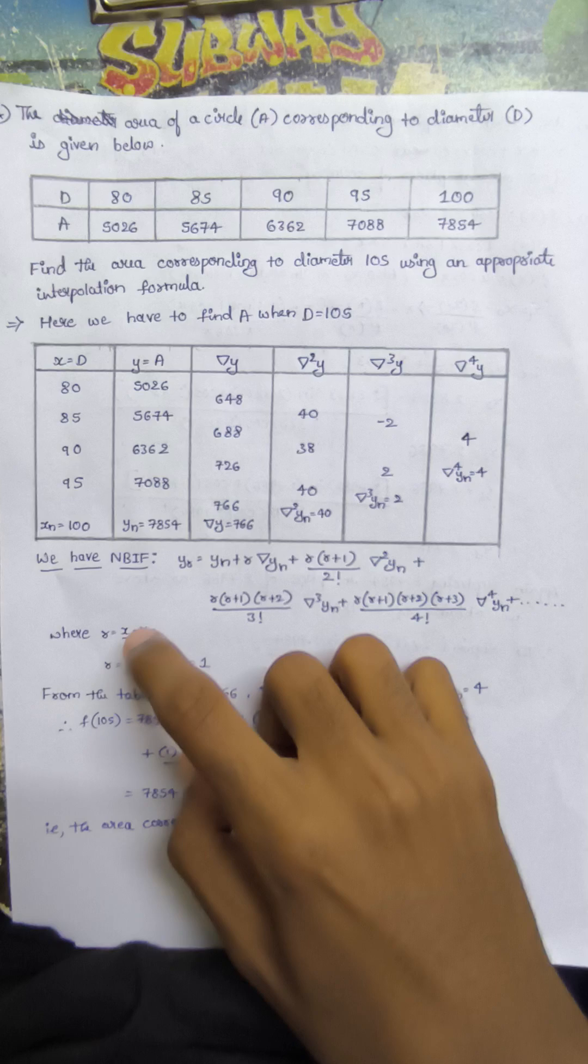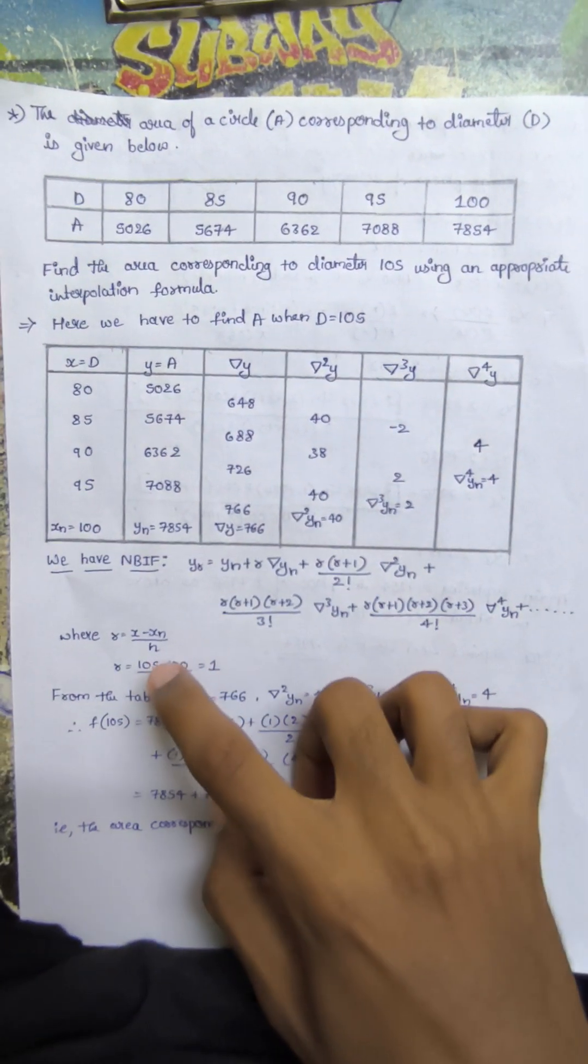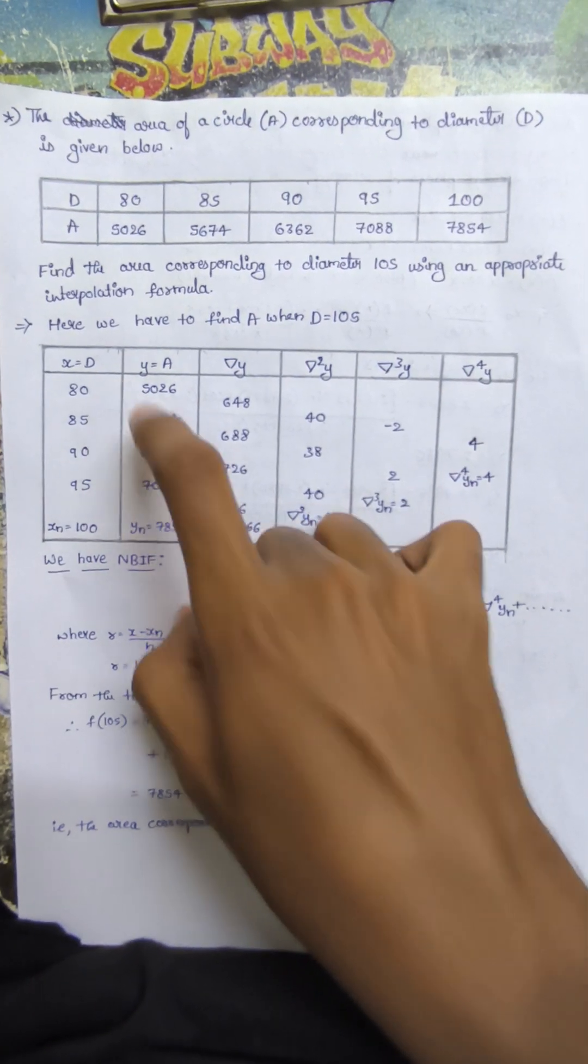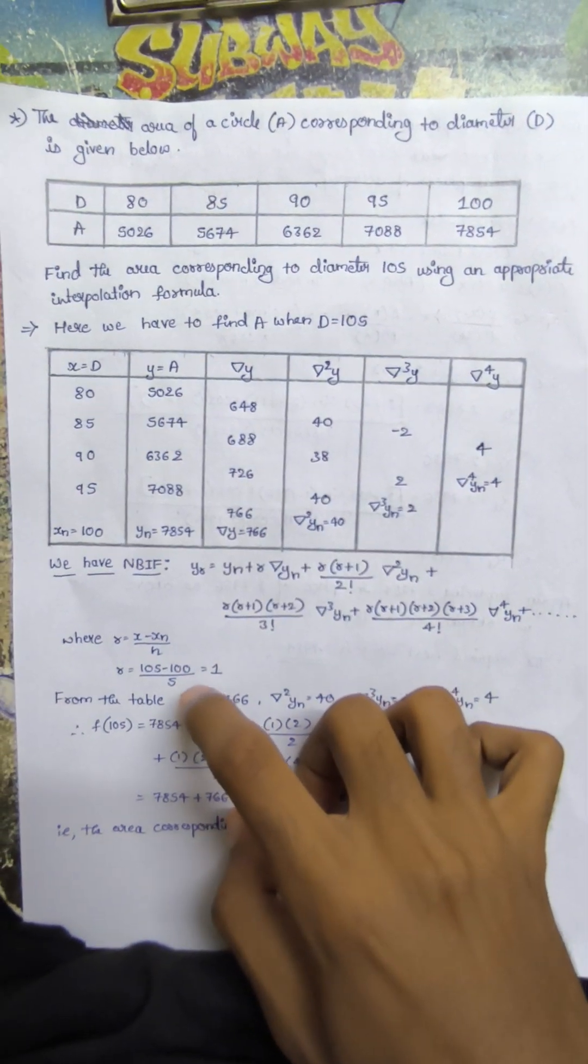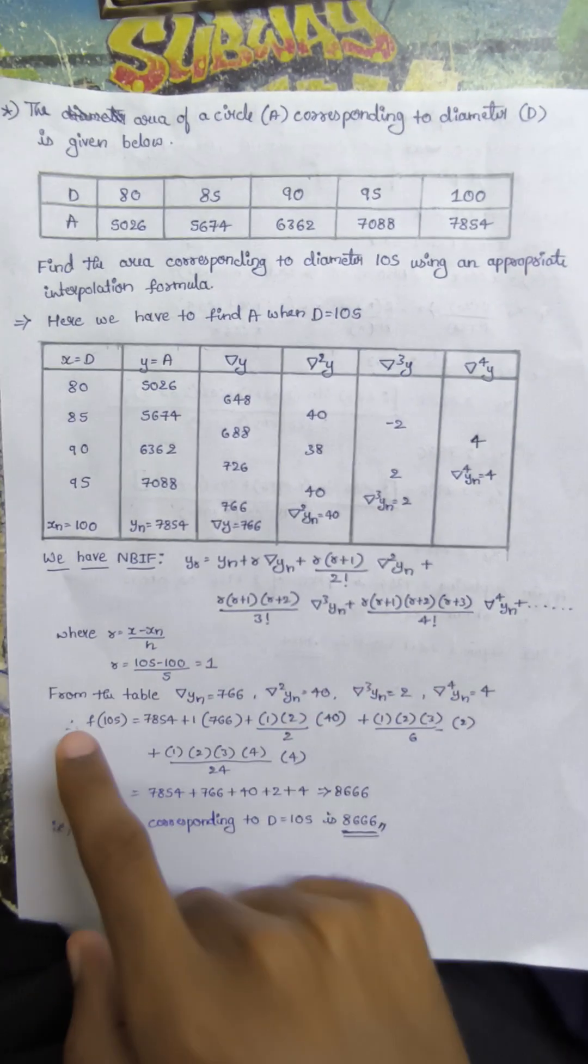The xn value is 100. The h value is 5, since the difference from 80 to 85 is 5. So r = (105 - 100)/5 = 1. From the table: